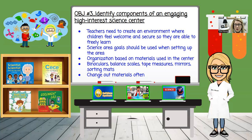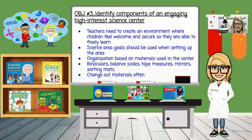Make sure materials are well organized, in good condition, and that you rotate and change them often. Some basic supplies to have in the science center are binoculars, balance scales, tape measures, mirrors, and sorting mats. To keep a child's interest, you will need to change the materials out often throughout the year. Some broad concepts of science areas might include nature and animal aspects, physical and earth science, and sensory explorations — which can be done directly in the science center or in a sensory area that includes a sand and water table.